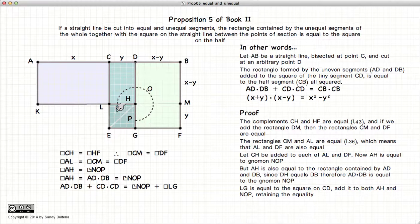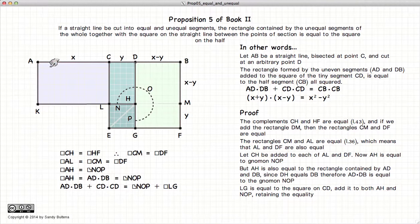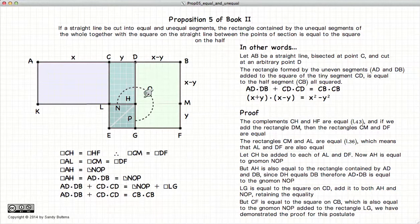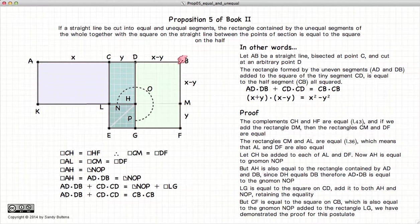If we now add LG or CD squared to both sides of the equation, we have AD times DB, which is this area here AH, plus CD squared, which is this area, will equal this entire square, plus this little square. But NOP plus this little square is equal to CB all squared. So we have shown that AD times DB plus CD squared is equal to the whole of the square of CB.